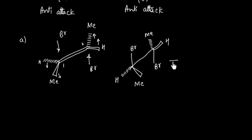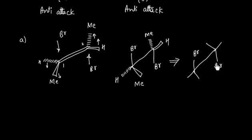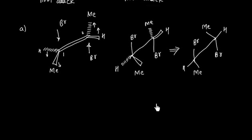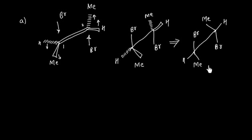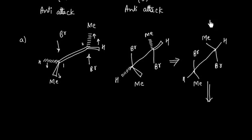Now let us convert this into Fischer's projection formula. In the sawhorse representation we have a regular Y and an inverted Y. Bromine is here on carbon-1, bromine is here on carbon-2, with methyl-hydrogen on one carbon and hydrogen-methyl on the other. To convert into Fischer's projection formula, I need two bonds pointing away from the observer.